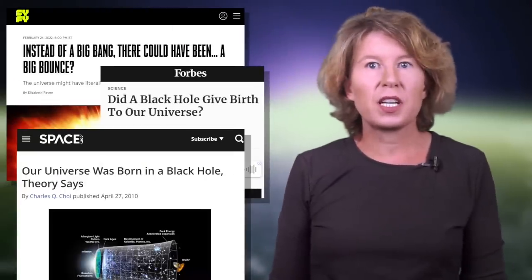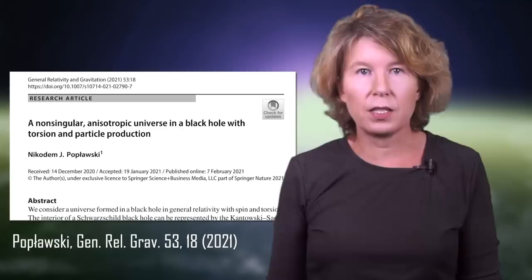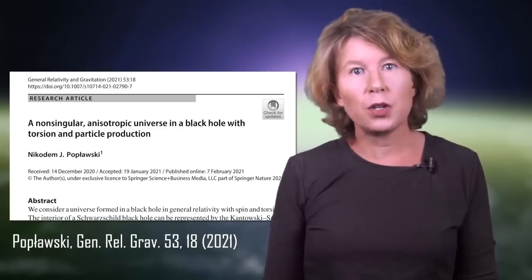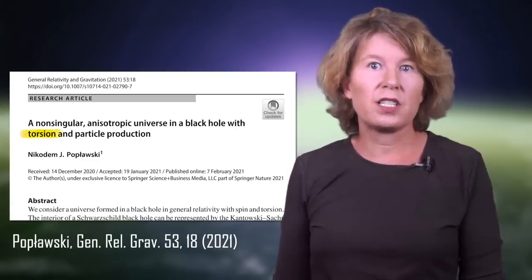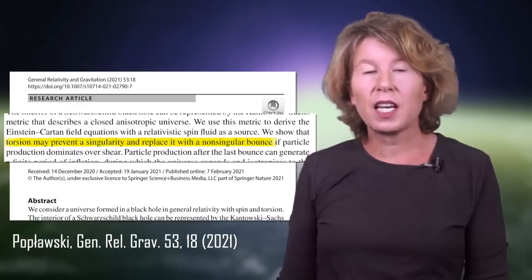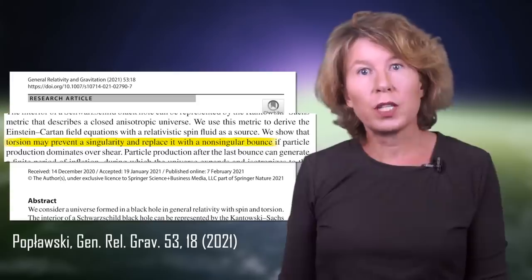Here's one that's been kind of popular recently, an idea that was put forward by Nicodem Poblowski. For this you change general relativity by adding new terms to the equations called torsion. This removes the big bang singularity and replaces it with a bounce. Our universe then came out of a bottleneck that's quite similar to a black hole, just without the singularity.